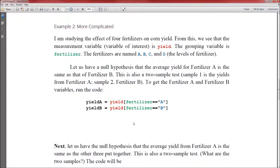Let us have a null hypothesis: fertilizer A is the same as fertilizer B. Which means I only need the yields for fertilizer A and fertilizer B, not for all four of them. So I'm going to create two variables, yieldA and yieldB. The code is: yieldA = yield[fertilizer=="A"] and yieldB = yield[fertilizer=="B"]. Measurement variable is yield, bracket, grouping variable is fertilizer, equal equal, the level is A in quotation marks, closing bracket. Similar for yield B.